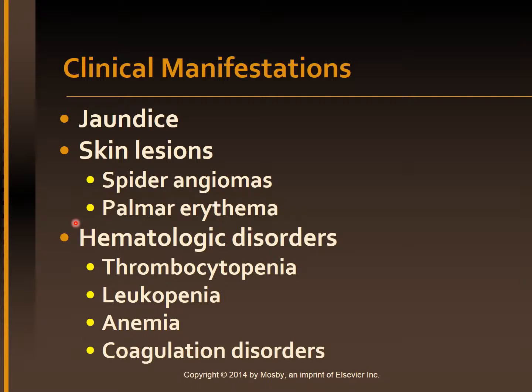Hematologic problems include thrombocytopenia, leukopenia, anemia, and coagulation disorders. Thrombocytopenia, leukopenia, and anemia are caused by splenomegaly. Splenomegaly results from backup of blood from the portal vein into the spleen, caused by portal hypertension. The enlarged spleen destroys platelets, causing thrombocytopenia and increased risk for bleeding. Anemia is also due to inadequate RBC production and survival, poor diet, poor absorption of folic acid, and bleeding from varices.